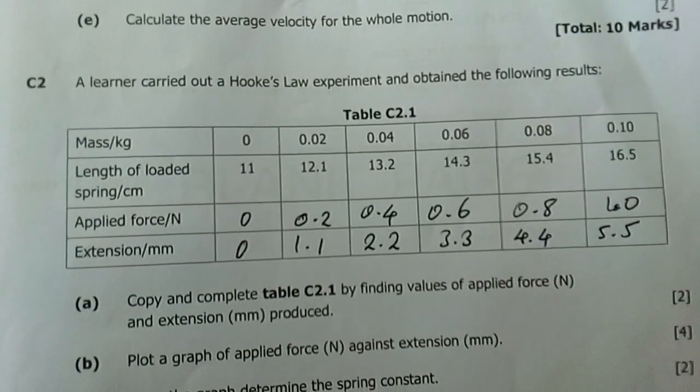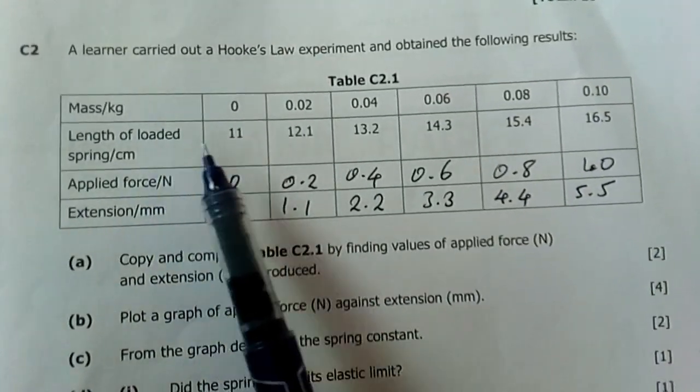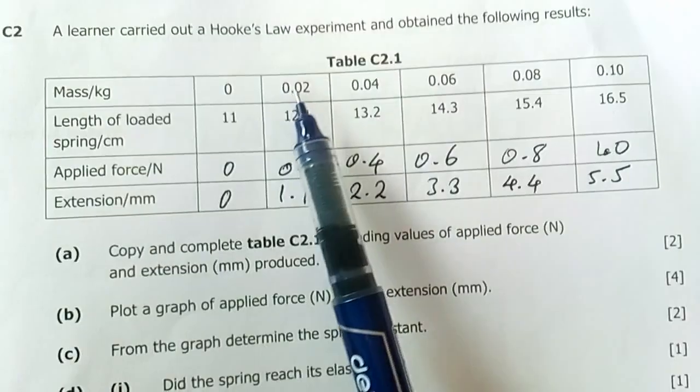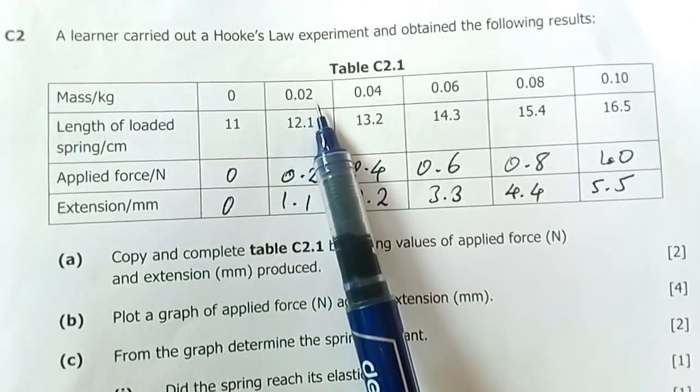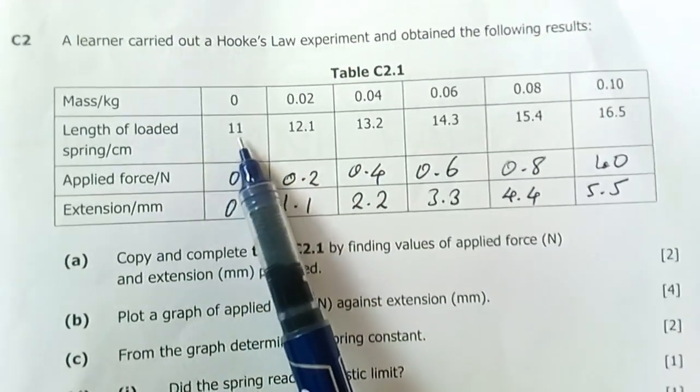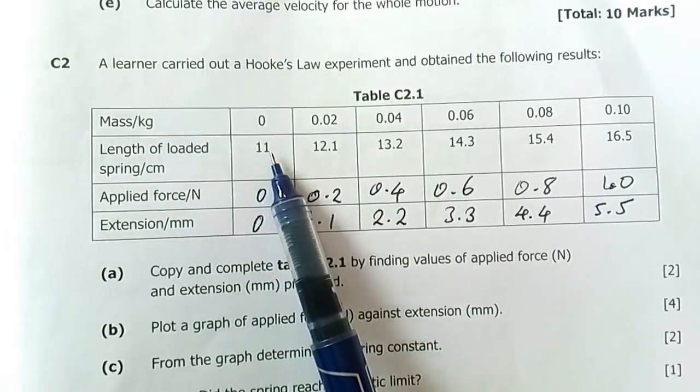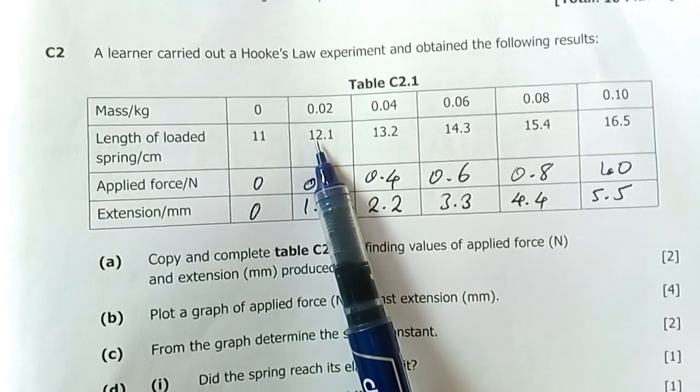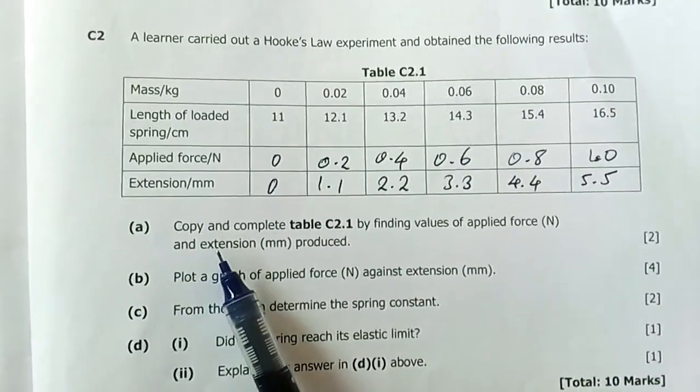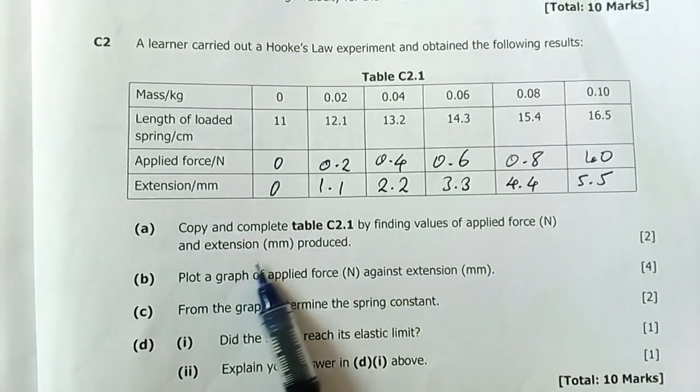Question two: A learner carried out Hook's law experiment and obtained the following results. Length when there's no load is 11. Mass in kilograms: when there's a load, the length of the spring is 11. When you add a 0.02 kilogram load, this load is in mass. The extension is by 1.1 because this is the length of the spring. The difference between the length of the spring and the final reading after the spring is loaded is called the extension.